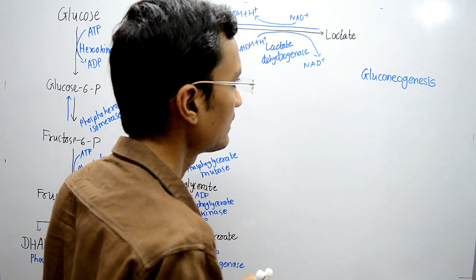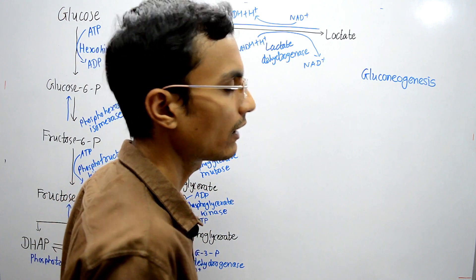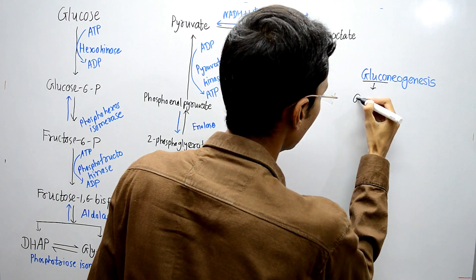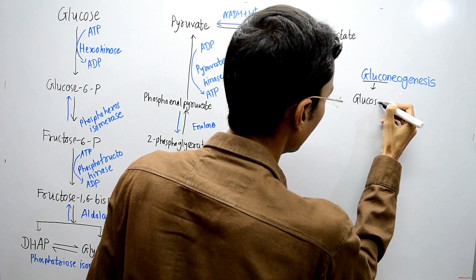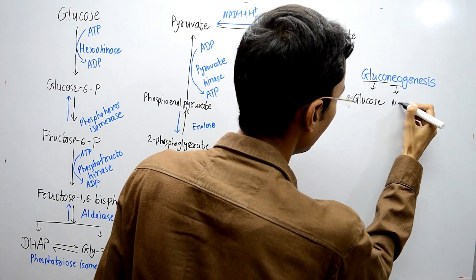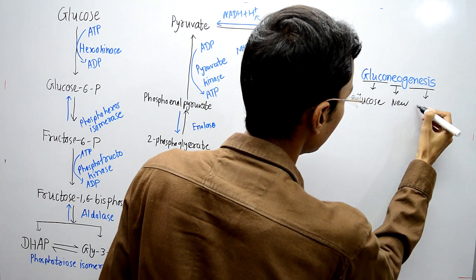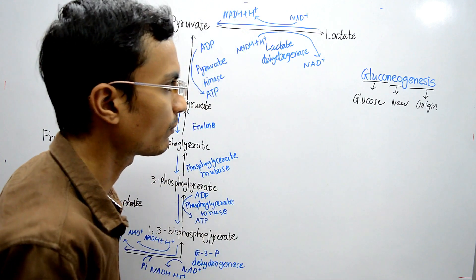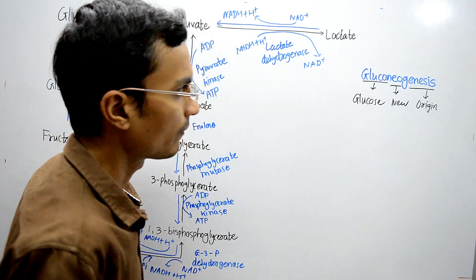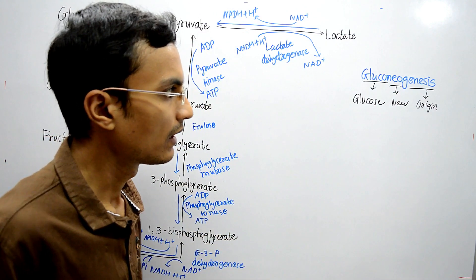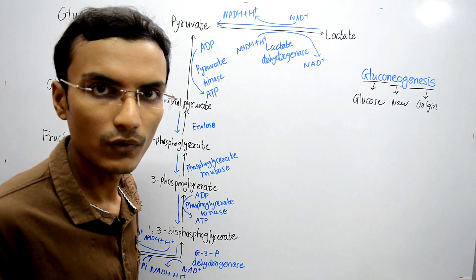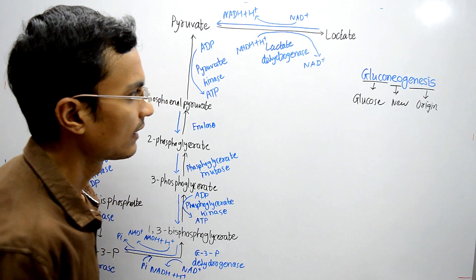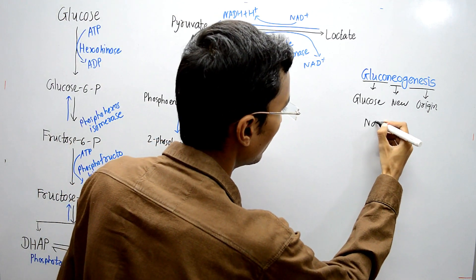Gluconeogenesis is made up of three different words: glucose means glucose, neo means new, and genesis means origin. So that is the production of glucose from some new source — meaning the production of glucose from a source other than carbohydrate, i.e., a non-carbohydrate source.